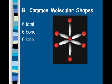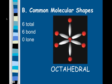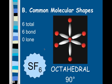Our last shape is the octahedral, or octahedron. We have six total pairs of electrons, all of which are bonding. It's called octahedral because you end up with four sides on the bottom and four sides on top, making an octagon shape. All bond angles are 90 degrees no matter how you look at it. This is an expanded octet since you have six things connected to a central atom. Our expanding octet example was sulfur hexafluoride, SF₆. And that is it for molecular geometry and VSEPR theory.